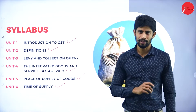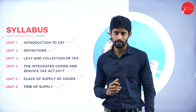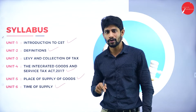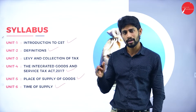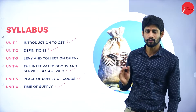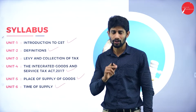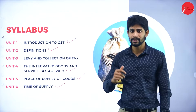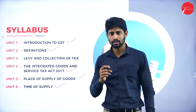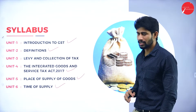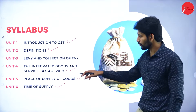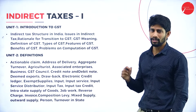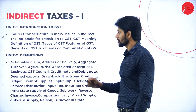Unit six deals with time of supply — at what time you supplied the goods. It's not about clock time, like 12 o'clock or 5 o'clock in the evening. We are talking about on what date the goods are supplied. That is called time of supply in GST, and we are going to study it in unit number six.